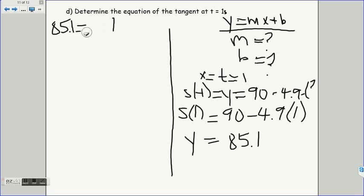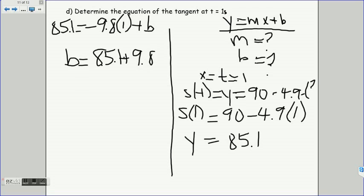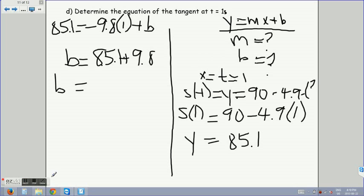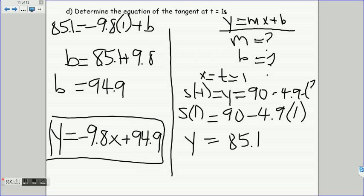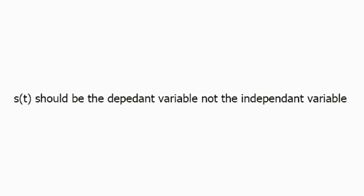So that means b is equal to 85.1 plus 9.8, which equals 94.9. Putting it back into our general equation, y equals minus 9.8x plus 94.9. And that is our equation for the tangent at t equals 1 second.